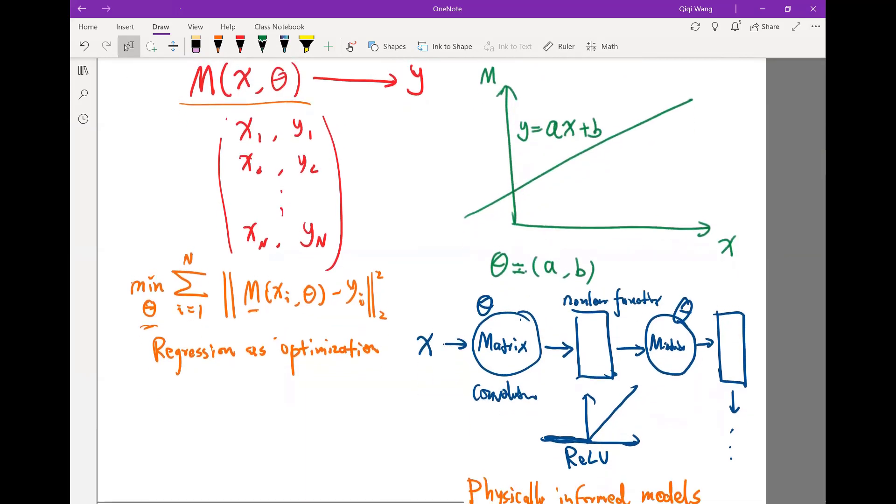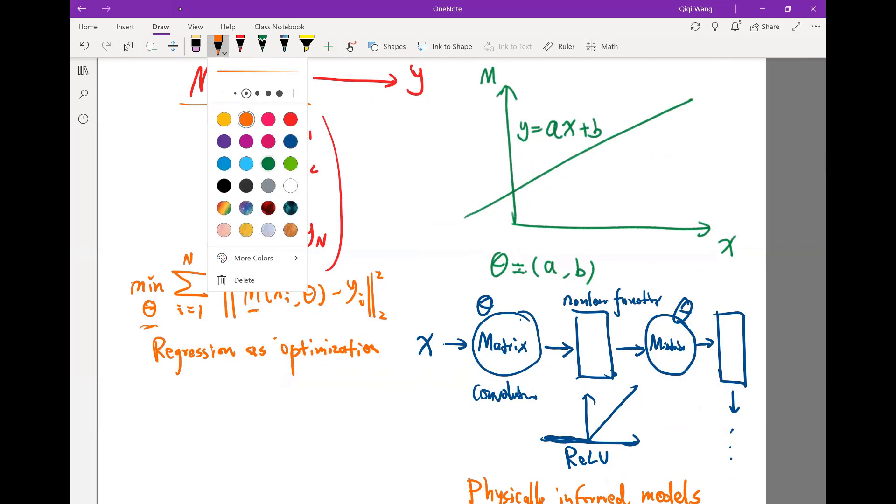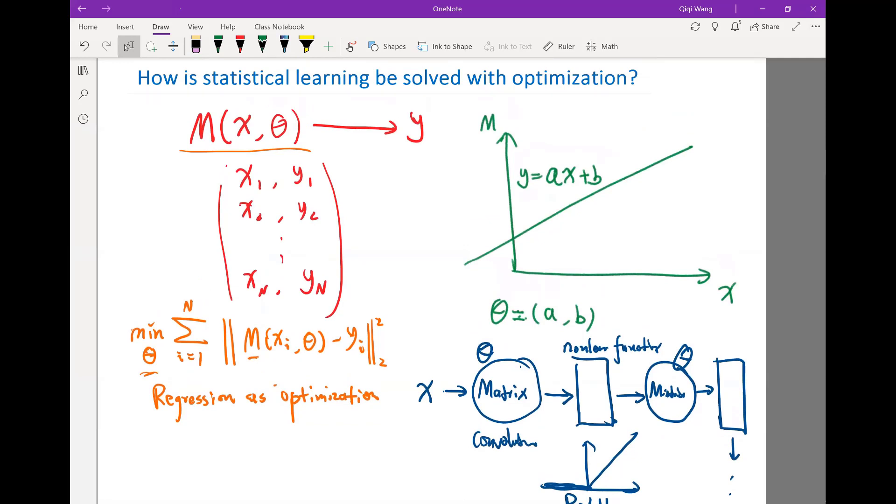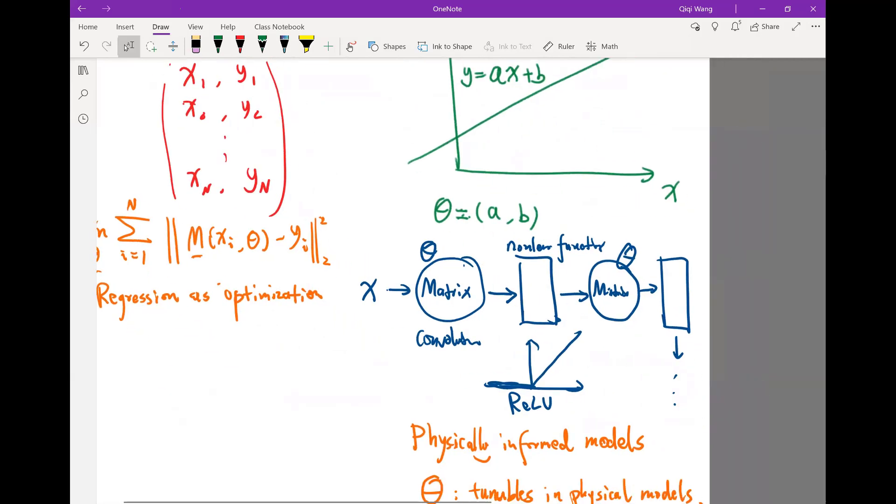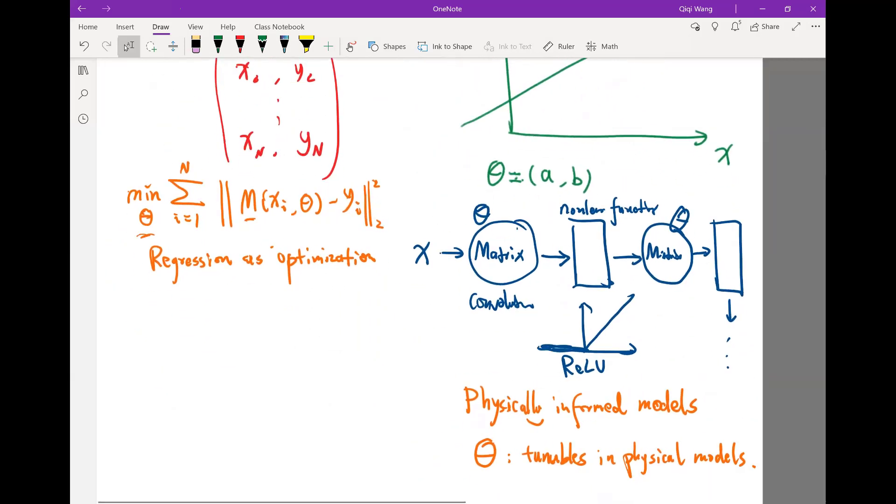And the classification problems can be solved with a pretty similar way. For a classification problem, usually the output of the model is not going to be exactly a discrete number, but a set of numbers, a set of probabilities for each discrete choice. OK, so let me write it down a little bit more.